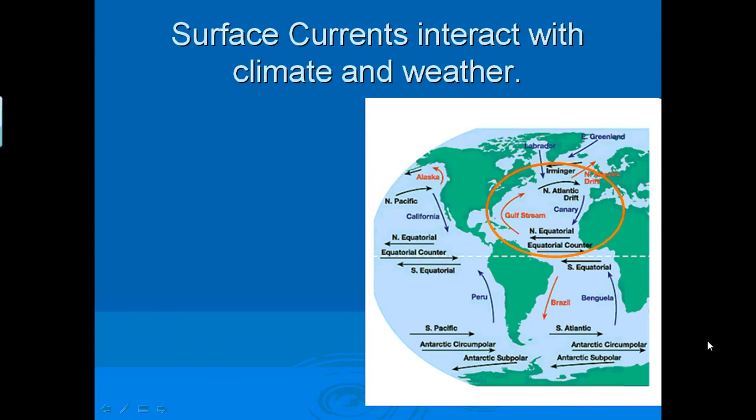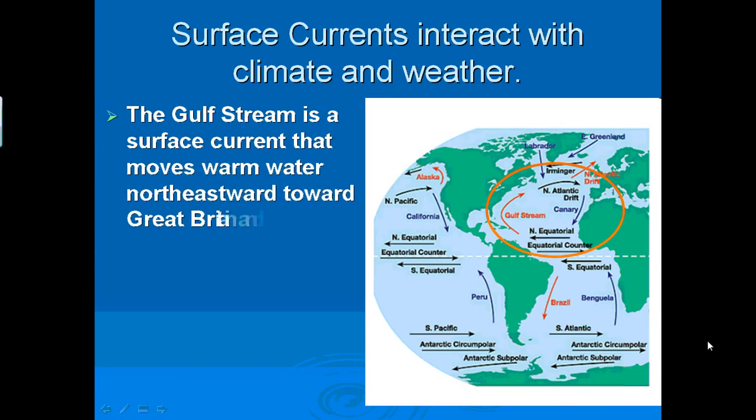Our surface currents interact with our climate and our weather, so they affect our climate and weather. The Gulf Stream, if you'll look at it on your map, the Gulf Stream in red is a surface current that moves warm water northeastward towards Great Britain and Europe. So the Gulf Stream runs right along the coast of Georgia, where we live, and it's coming from the equator and going up towards Iceland and towards Britain.